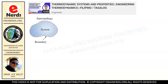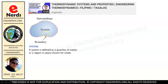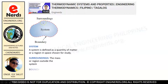Here I'm going to have a quick review. A system is defined as a quantity of matter or a region in space chosen for study — this is our system that we are considering. The surrounding is the mass or region outside the system. Outside our system is our surrounding, and this dotted line here is our boundary — the real or imaginary surface that separates the system from its surrounding.